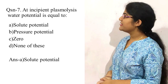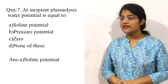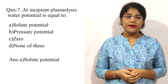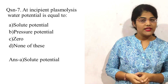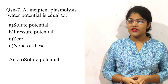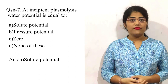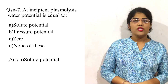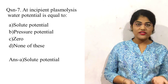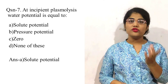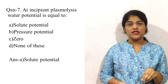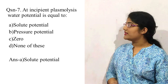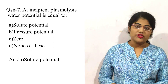Question number seven: at incipient plasmolysis, the water potential is equal to what? Options are option A is solute potential, option B is pressure potential, option C is zero, and option D is none of these. The correct option is A, solute potential. Plasmolysis is of two types: incipient and evident. Incipient is the beginning stage, where only solute potential exists — no pressure is created yet. Pressure is created in the evident stage.